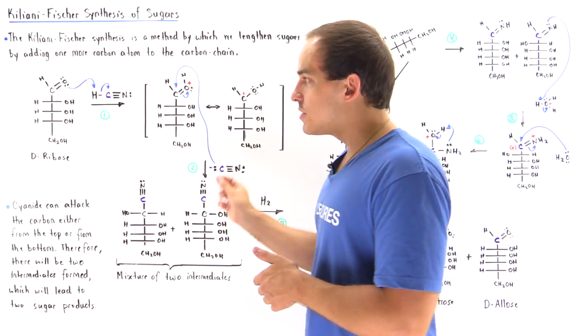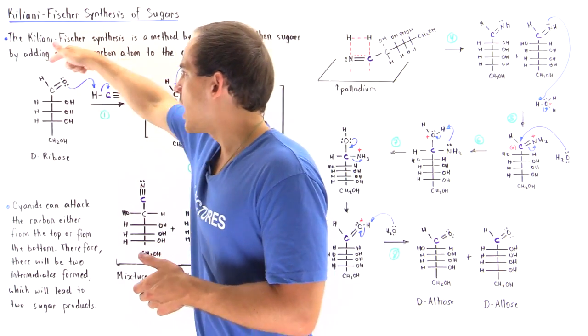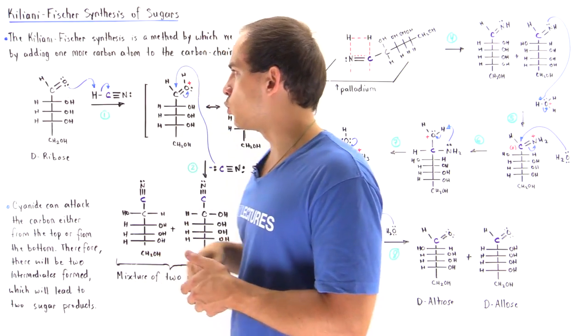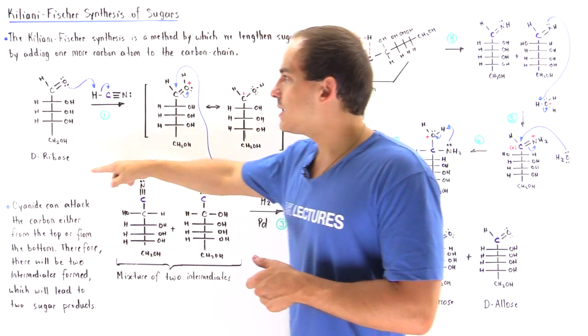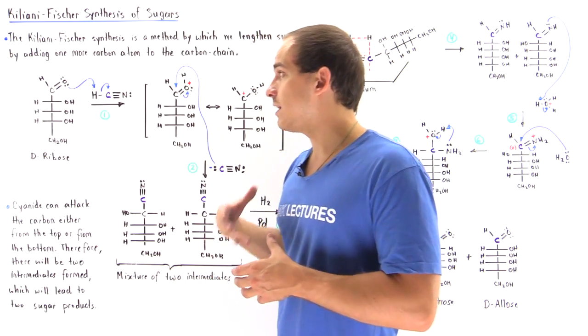Notice we have to use the acyclic version because the acyclic version contains our free aldehyde group as shown in this diagram. Because we begin with five sugars, because we begin with an aldopentose,